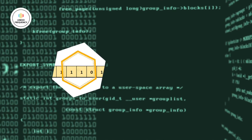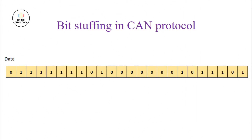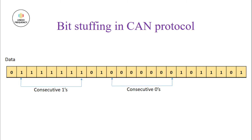Let's take a simple example. Assume we have data that is to be transmitted as represented on the screen. In the data, you can observe there are consecutive same values, that is either 1s or 0s — the consecutive values are highlighted for understanding. If we try to send the same data over the CAN bus, it will indicate a stuff error. So the data must be handled in order to transmit properly.